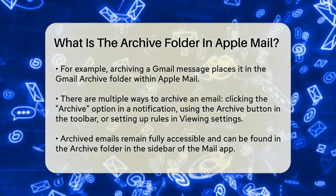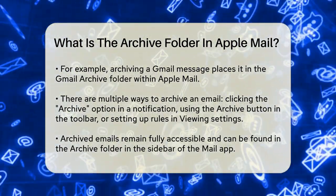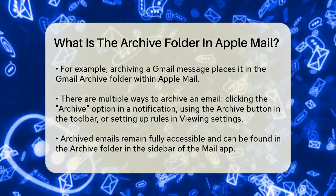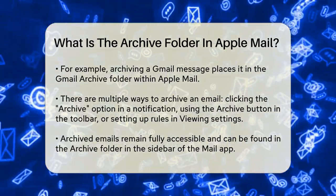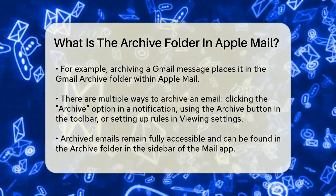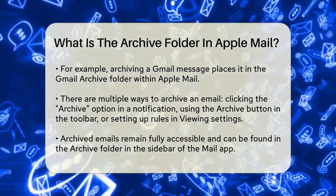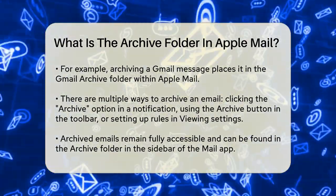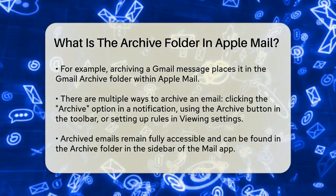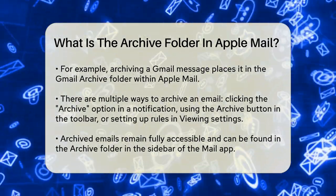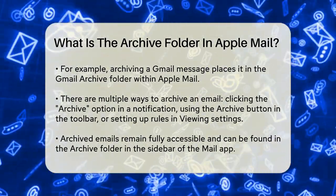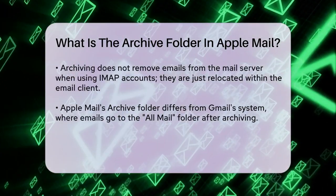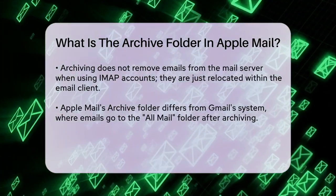To archive an email, you can use a few different methods. If a mail notification pops up, you can click on the Archive option. Alternatively, you can select one or more messages in the Mail app and click the Archive button in the toolbar. You can also set up rules in the viewing settings to automatically archive messages.